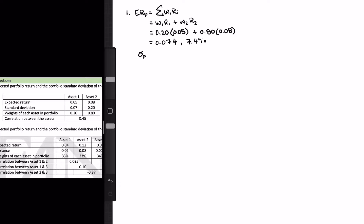Next, let's find the standard deviation of the portfolio. The standard deviation is simply the square root of the variance of the portfolio, so we have to figure out what the portfolio variance is. To do that, we have a formula that is very similar whether it's a two-asset, three-asset, or four-asset portfolio.